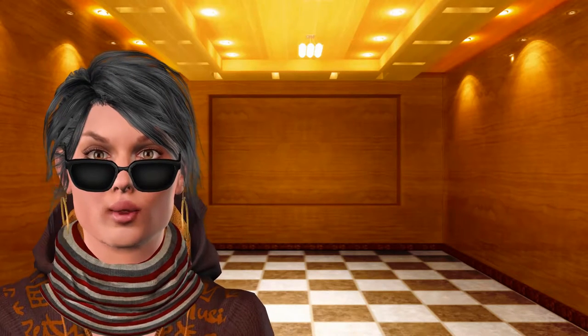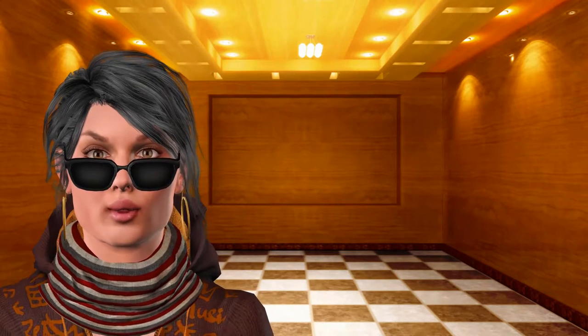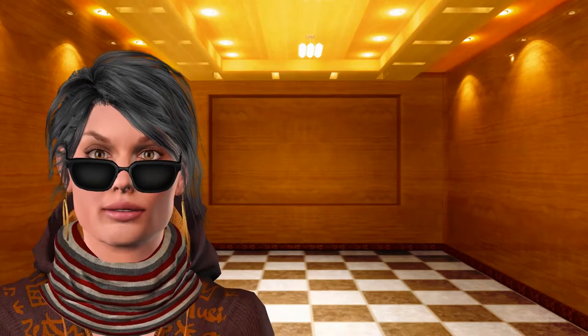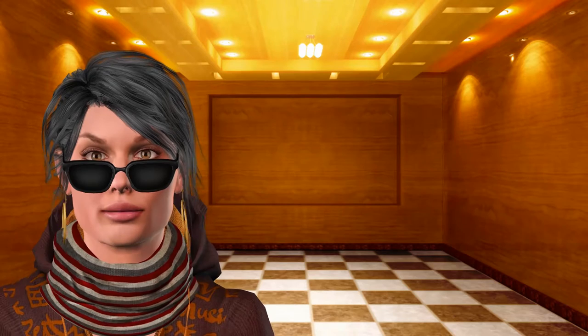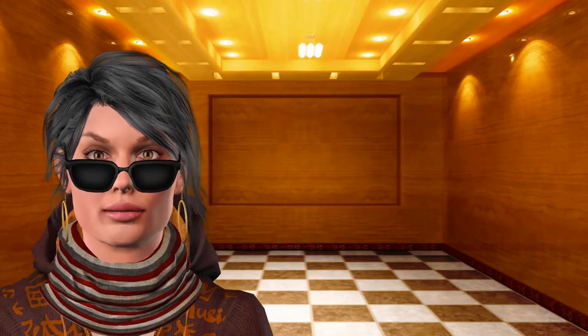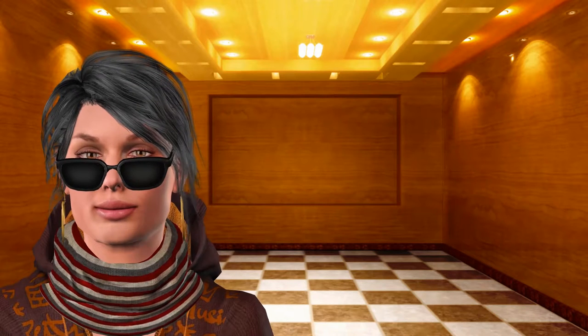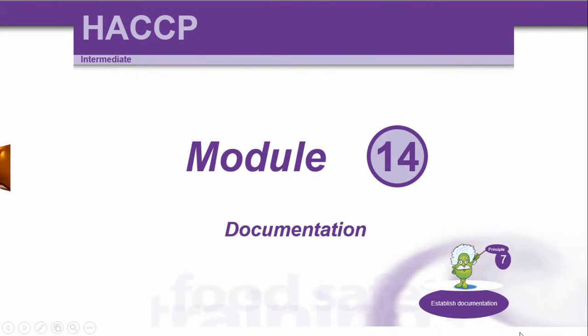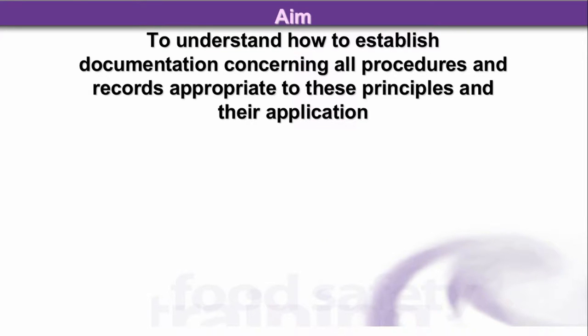This is module 14 of the 15 module course for HACCP Intermediate Level 3. The last one, module 15, will be 10 multiple choice questions — look out for those on the last video. Enjoy this last informational video. The last module, module 14, is Documentation in the HACCP Intermediate Course. One is Principle 7 of the HACCP system to establish documentation.